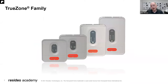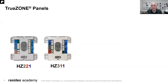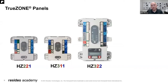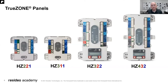We have a product that fits every application, whether using a heat pump with or without backup, or a multi-stage conventional system. We have our HZ221, HZ311, HZ322, and HZ432. All you have to remember is that first number after the HZ — HZ stands for Honeywell Zone. The first number indicates the number of zones that panel is capable of. For example, the HZ322 is capable of controlling up to three zones, while the HZ432 can do up to four zones.